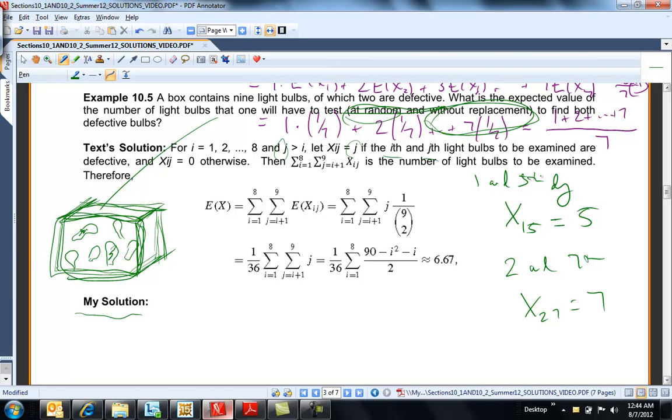So that's how they're labeling that random variable there. And let me see. Otherwise, X_ij is equal to 0. If the first two bulbs are not defective, then X_12 is 0. So in essence, then, if you sum up over all the X_ijs, then this is the number of light bulbs to be examined because this is either going to take on the value 0 or it's going to take on the value j where j is where you hit your 2nd defective.